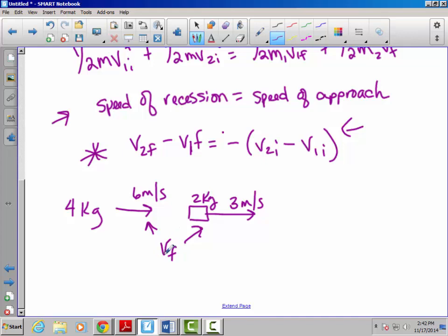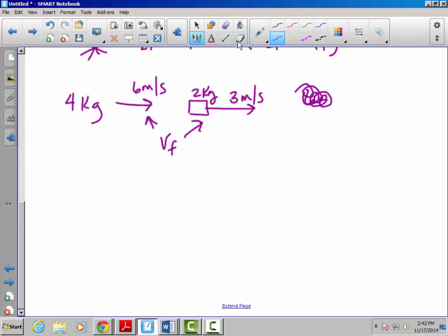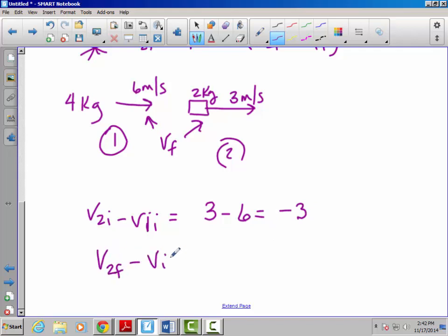So let me extend the page down here a little bit so we have some room. So initially V2i minus V1i, if we take this to be our first mass and this to be our second, then this is going to be 3 minus 6, which is negative 3. So our formula says V2f minus V1f equals the negative of negative 3, which in this case is going to give us 3.